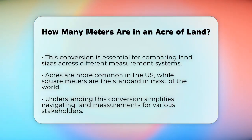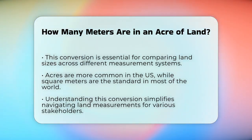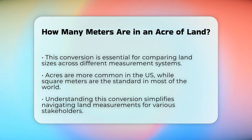In summary, to find out how many square meters are in an acre of land, you multiply the number of acres by 4,046.856422. This simple calculation will give you the exact area in square meters, helping you navigate land measurements with ease. Whether you're a real estate agent, a farmer, or just someone curious about land, this conversion will be your go-to tool.